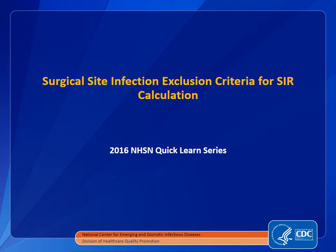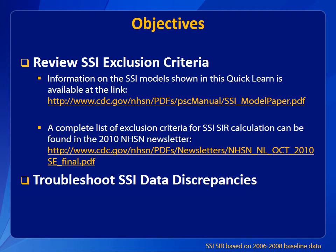These exclusion criteria are applied during calculation of the Standardized Infection Ratio, or SIR. We will review the three models in the NHSN application and learn how to apply the exclusion criteria based on your existing knowledge of SIR. The three SSI models in the application are complex AR, complex 30-day, and all SSI data. More information on SSI-SIR and how to generate the SIR can be found on the Patient Safety Analysis Resources page.